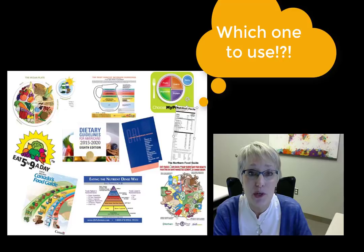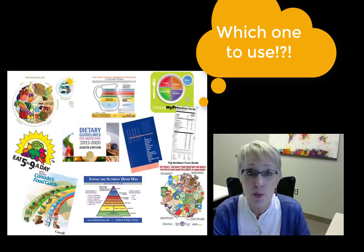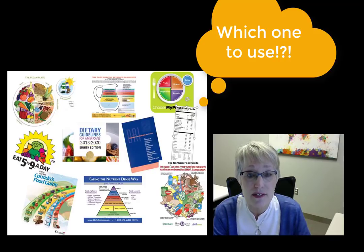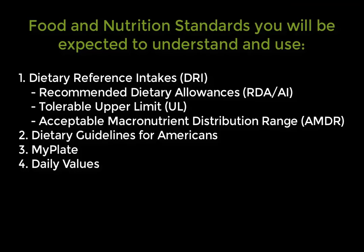It may seem obvious that we're going to use some type of food and nutrition standard to assess someone's dietary intake, but there are so many out there — which one should we use? For this class, we're going to focus on guidelines developed by the Food and Nutrition Board of the Institute of Medicine, National Academy of Sciences, and the Advisory Committee from the U.S. Department of Health and Human Services and the U.S. Department of Agriculture. These will include the dietary reference intakes, which includes subsets: the RDAs, upper limits, and the acceptable macronutrient distribution range; the dietary guidelines for Americans; MyPlate; and the daily values.